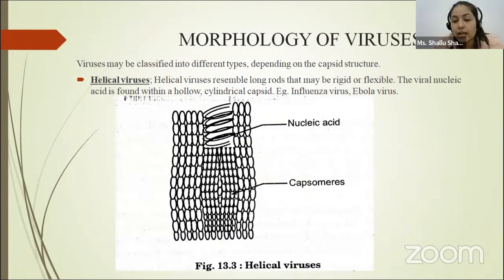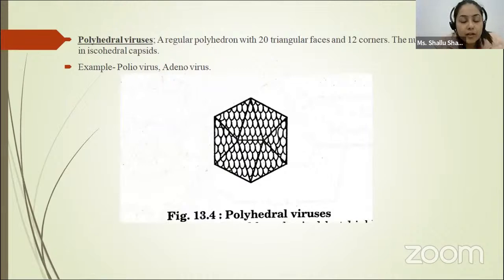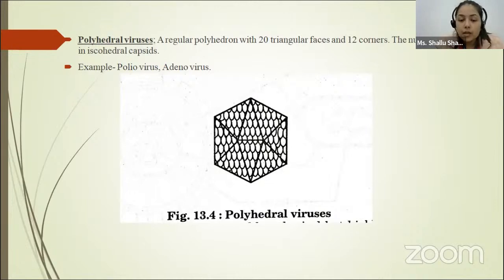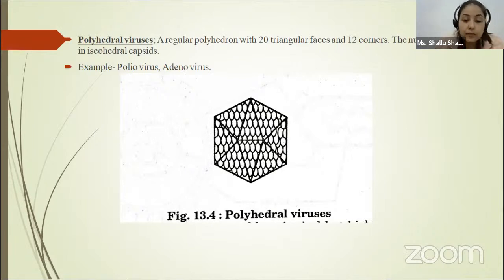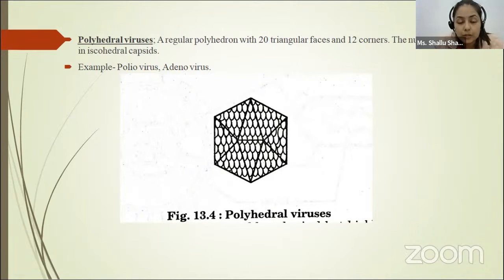Examples of helical viruses are influenza virus and Ebola virus. The second type is polyhedral virus. A polyhedral virus is a regular polyhedron with 20 triangular faces, 12 corners, and 30 edges. The nucleic acid is enclosed in an icosahedral capsid, which has two types of capsomers: pentagonal capsomers called pentons and hexagonal capsomers called hexons. Examples of polyhedral viruses are poliovirus and adenovirus.